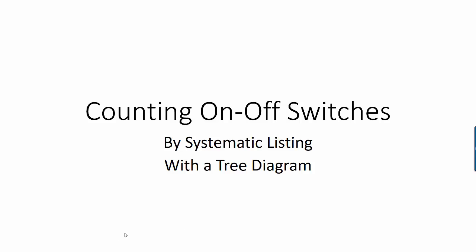Hi, I'm Ms. Hearn. Let's get started. In this video, we're going to talk about how to count combinations of on-off switches by systematic listing with a tree diagram. Systematic listing is just a method of counting by systematically listing out all the possibilities.